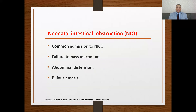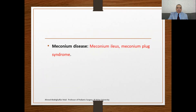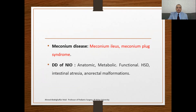We must speak about neonatal intestinal obstruction. Neonatal intestinal obstruction is a common cause for admission to the neonatal intensive care unit, forming about one-third of all admissions. Bilious vomiting, abdominal distension, and failure to pass meconium are the hallmarks for neonatal intestinal obstruction. However, the etiology differs between different causes of pediatric intestinal obstruction. Meconium disease refers to meconium ileus and meconium block syndrome, and the differential diagnosis will be related to anatomical, metabolic, and functional obstruction.